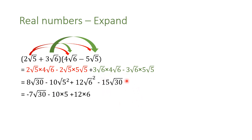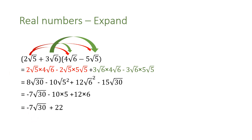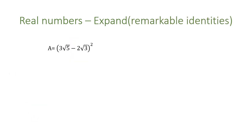We can add 8 radical 30 and minus 15 radical 30 because they have the same radical. The answer: 8 and minus 15 have opposite signs, so use the sign of the greatest which is minus, then subtract the numbers. We also compute 10 times 5 and 12 times 6, and here is our final value.